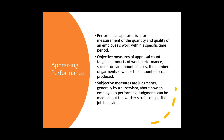Subjective measures are judgments, generally by the boss, about how an employee is performing. Judgments can be made about a worker's traits, specific job behaviors, or interpersonal dynamics — for example, if peers seem upset with someone on the work team, or if someone is always showing up late and leaving early, or has lost the passion they had when they first started.